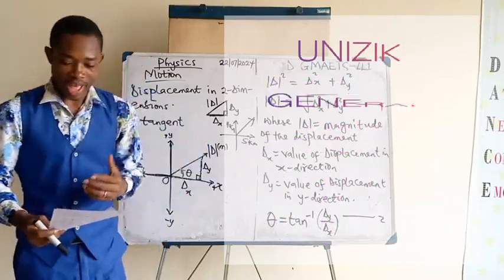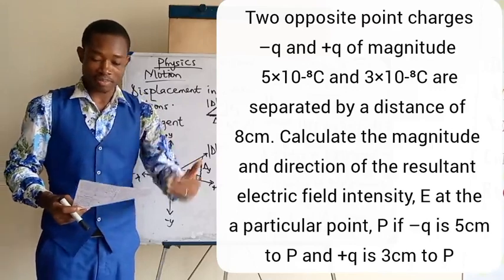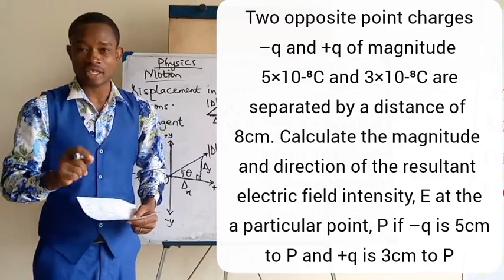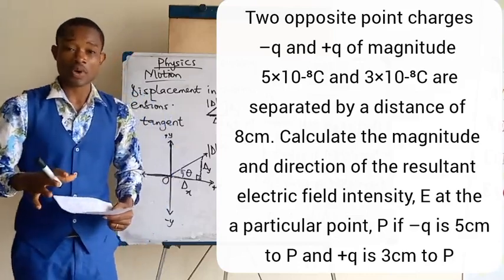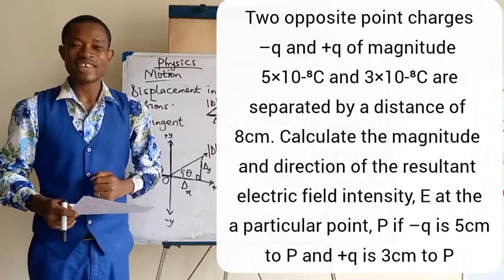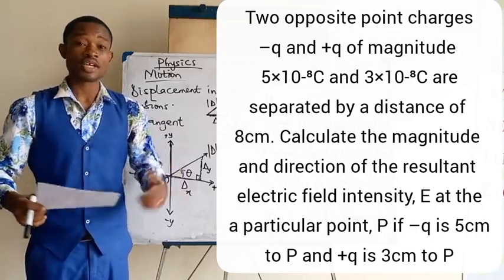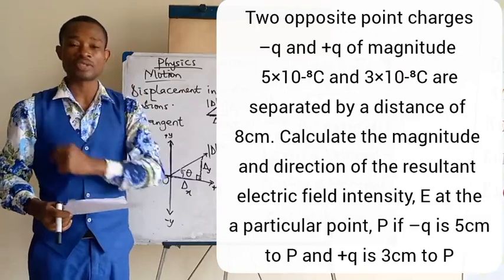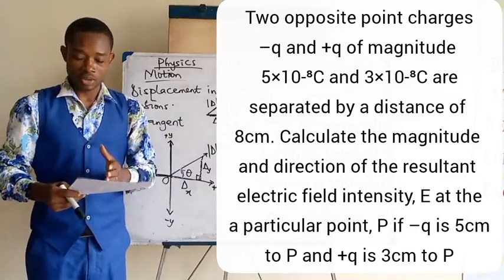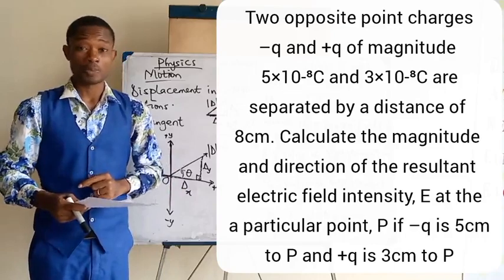What's the question? We have two opposite point charges, minus Q and plus Q, of magnitude 5 times 10 to the power of minus 8 Coulombs and 3 times 10 to the power of minus 8 Coulombs, separated by a distance of 8 cm. The examiner expects you to calculate the magnitude and direction of the resultant electric field intensity E at a particular point P.